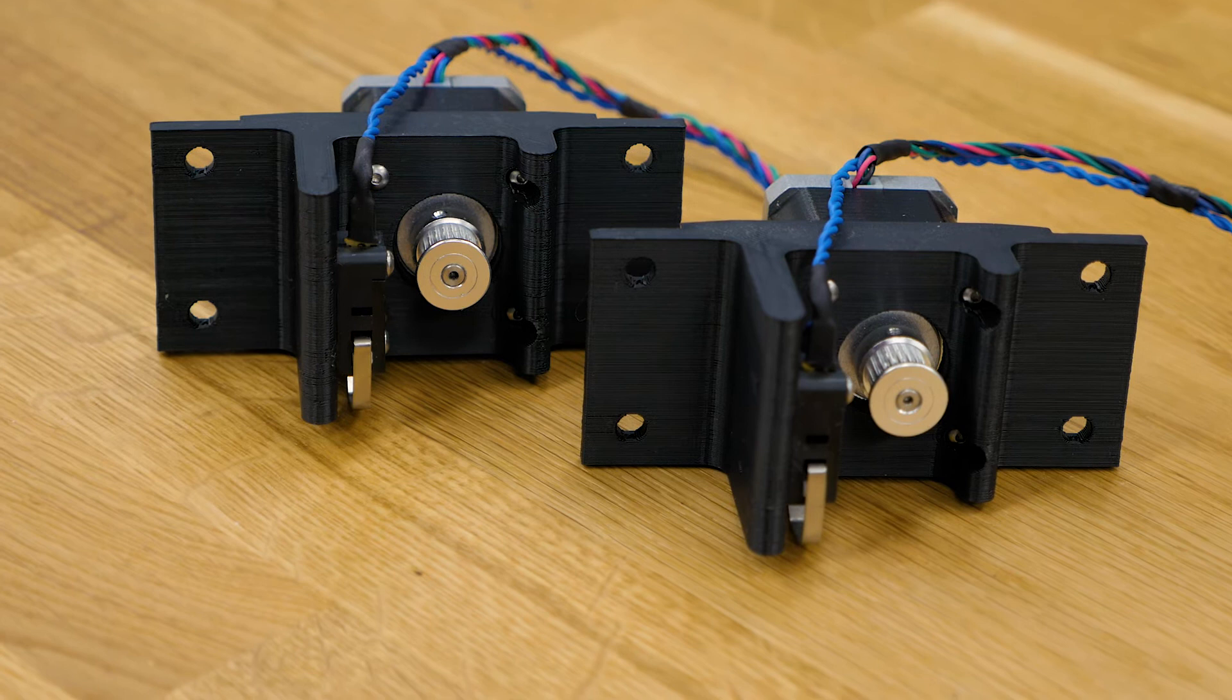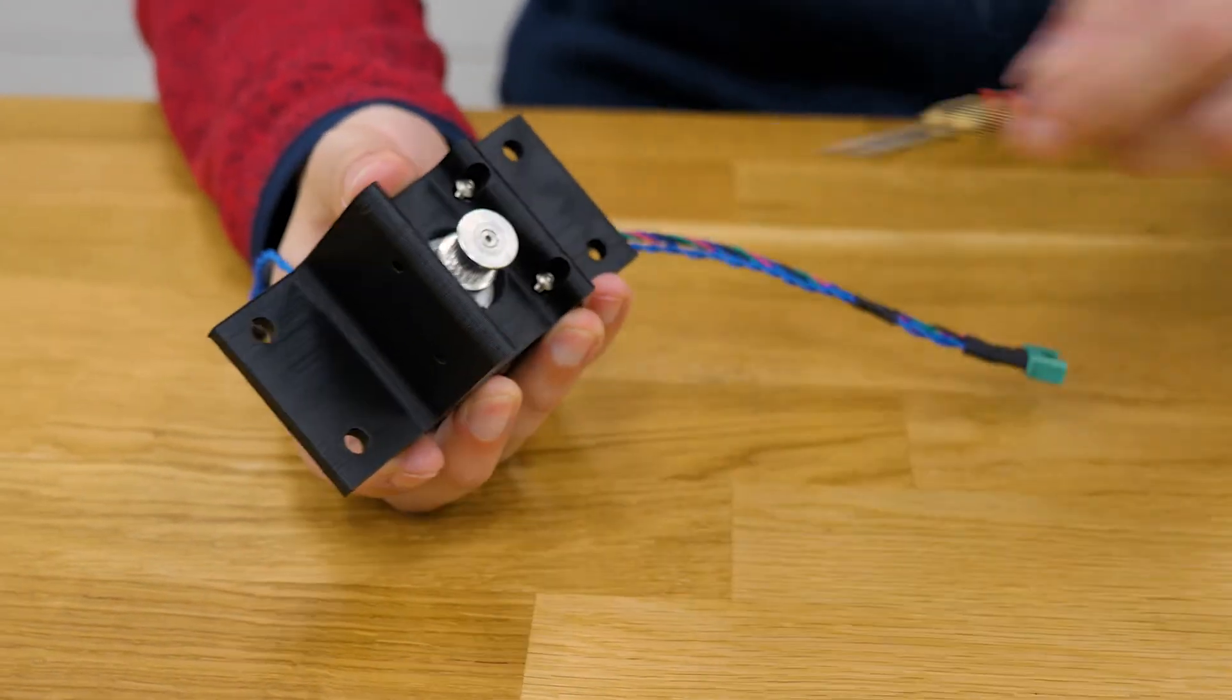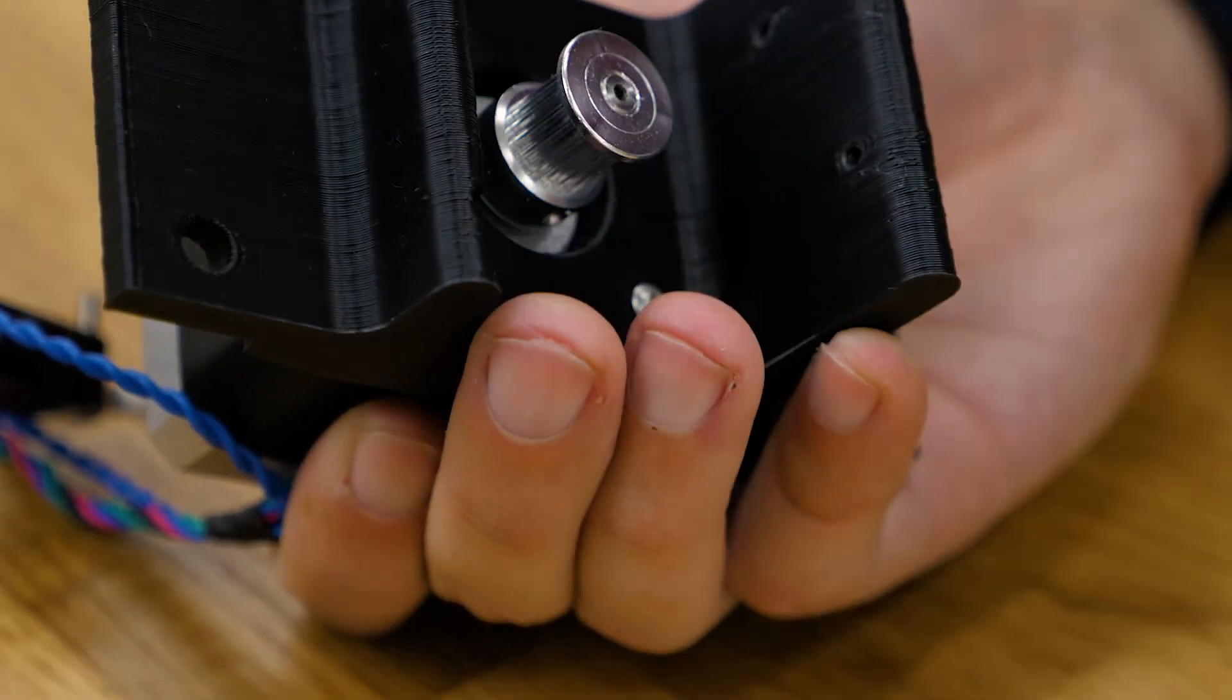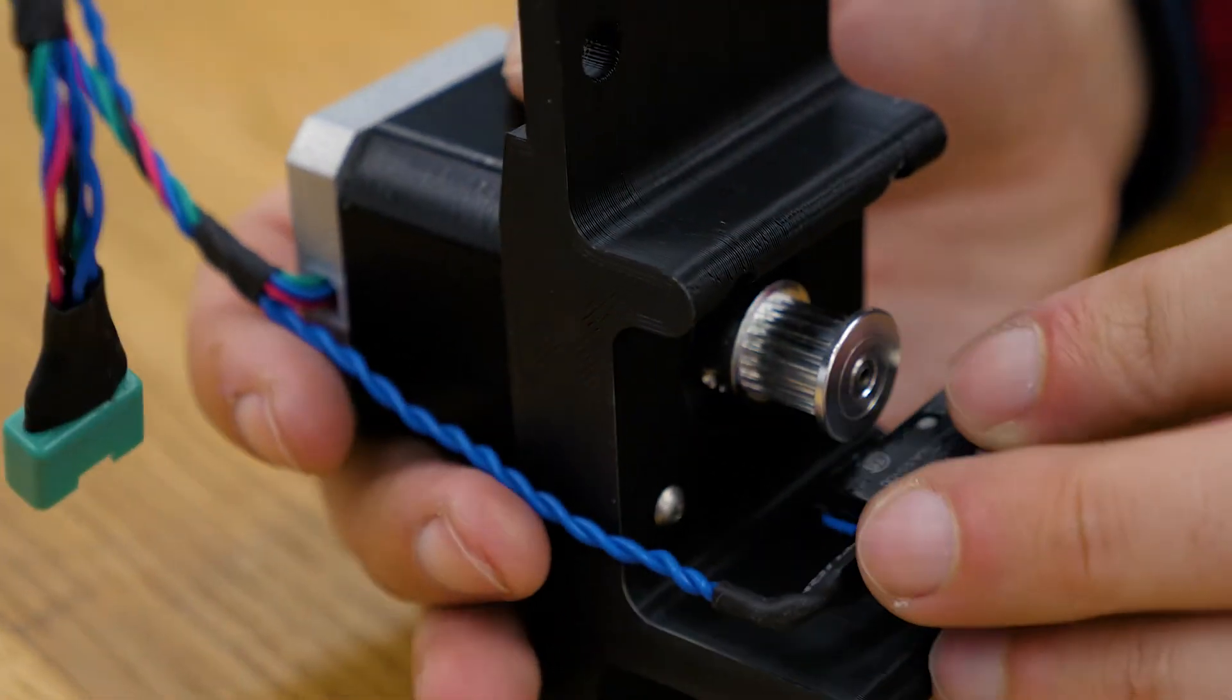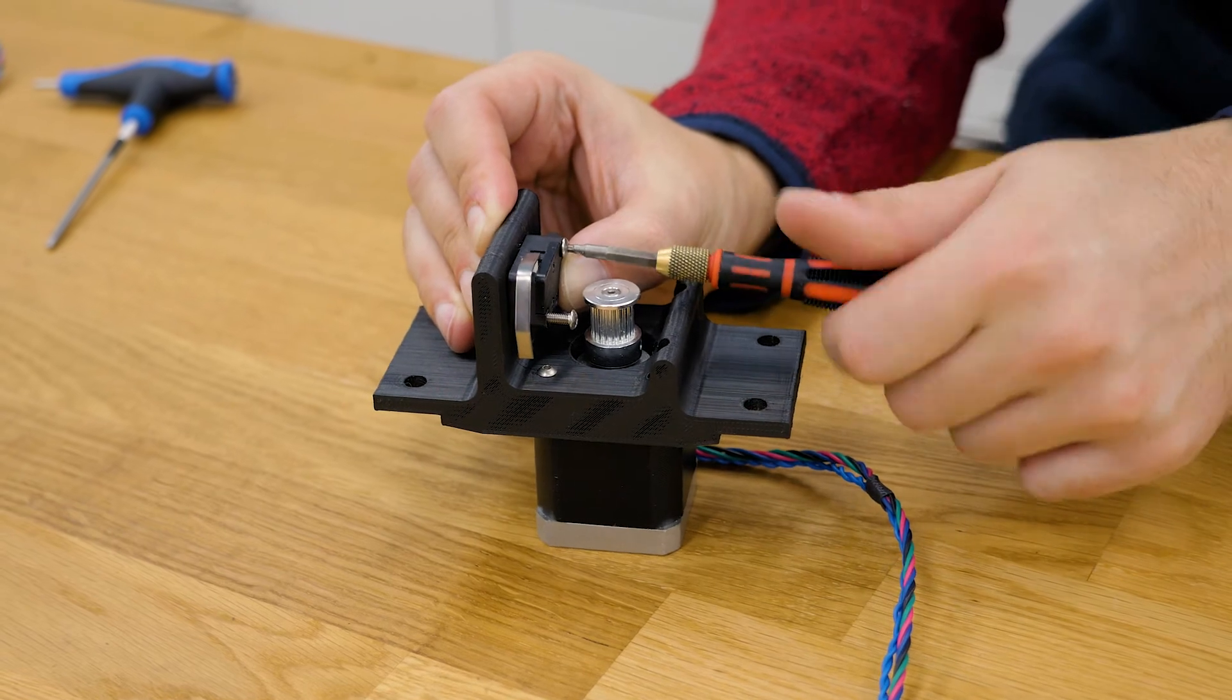The next assembly is the motor mount. I placed the NEMA 17 motor on the mount and fixed it in place with four M3 screws. After that I placed the limit switch on the sidewall and fixed it into place with again two M3 screws.